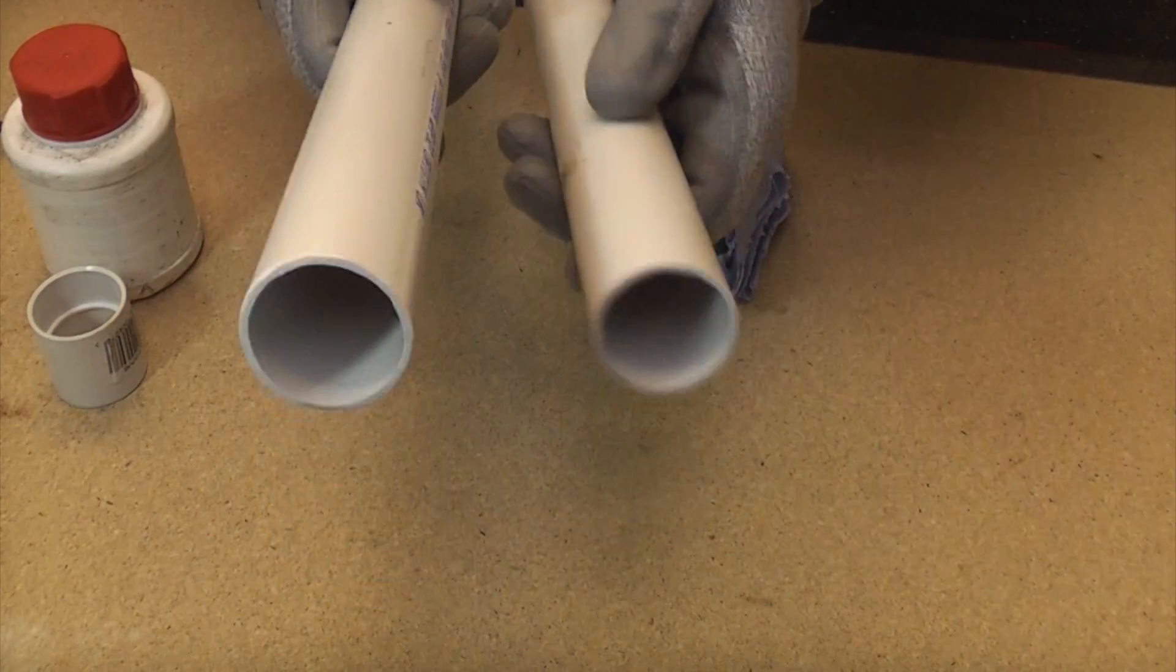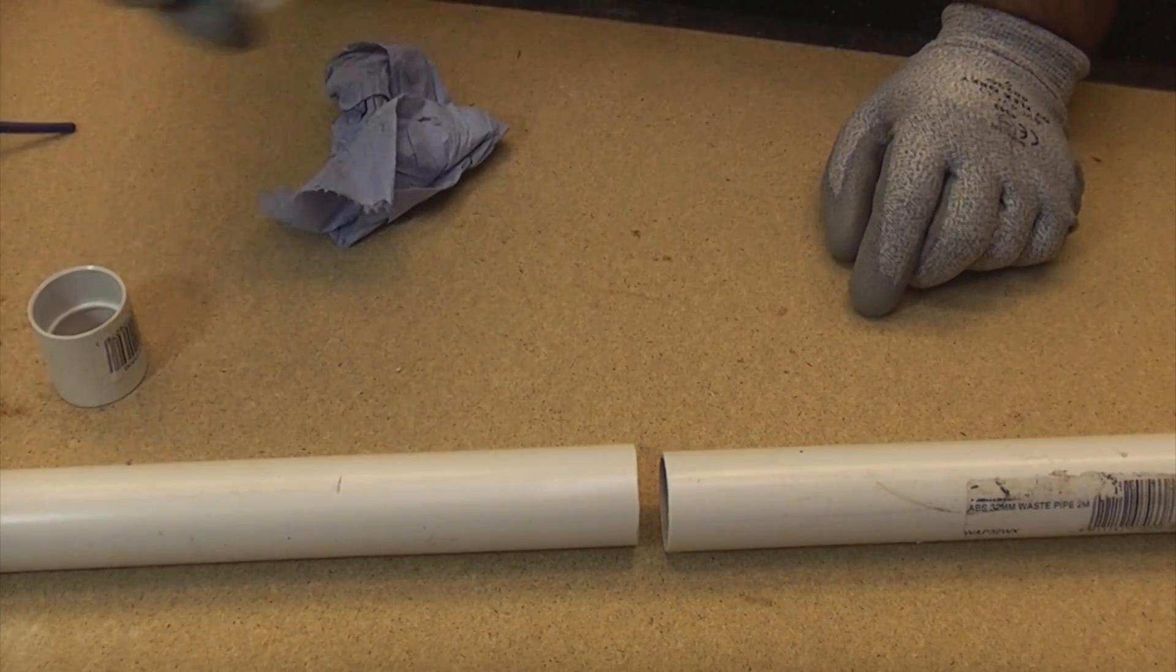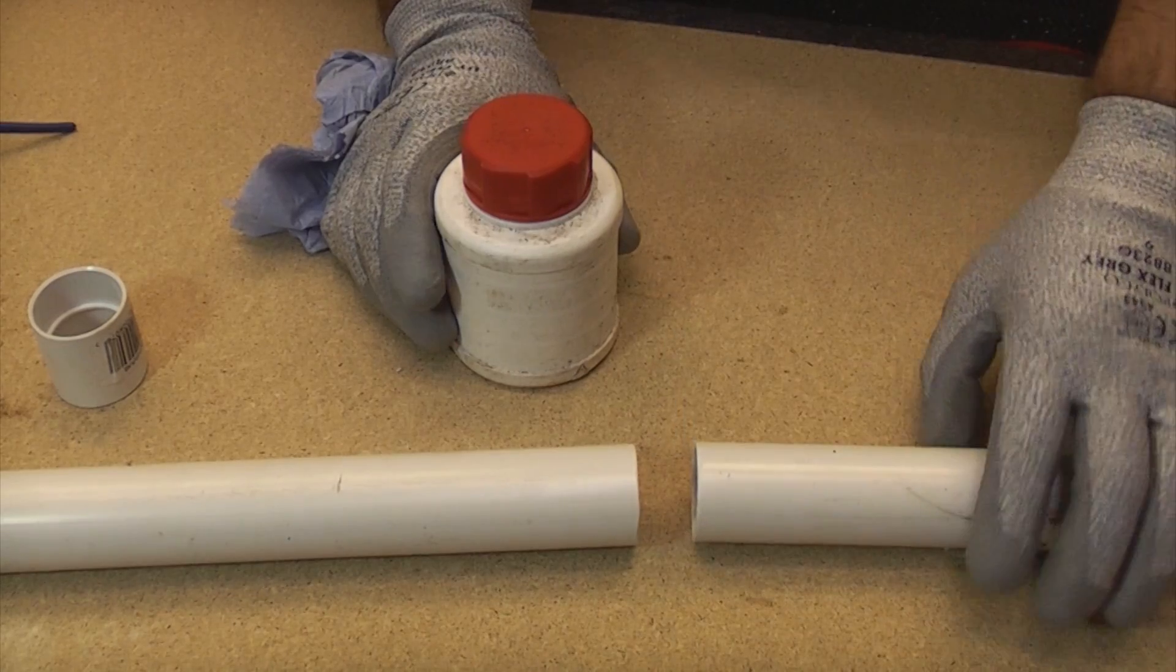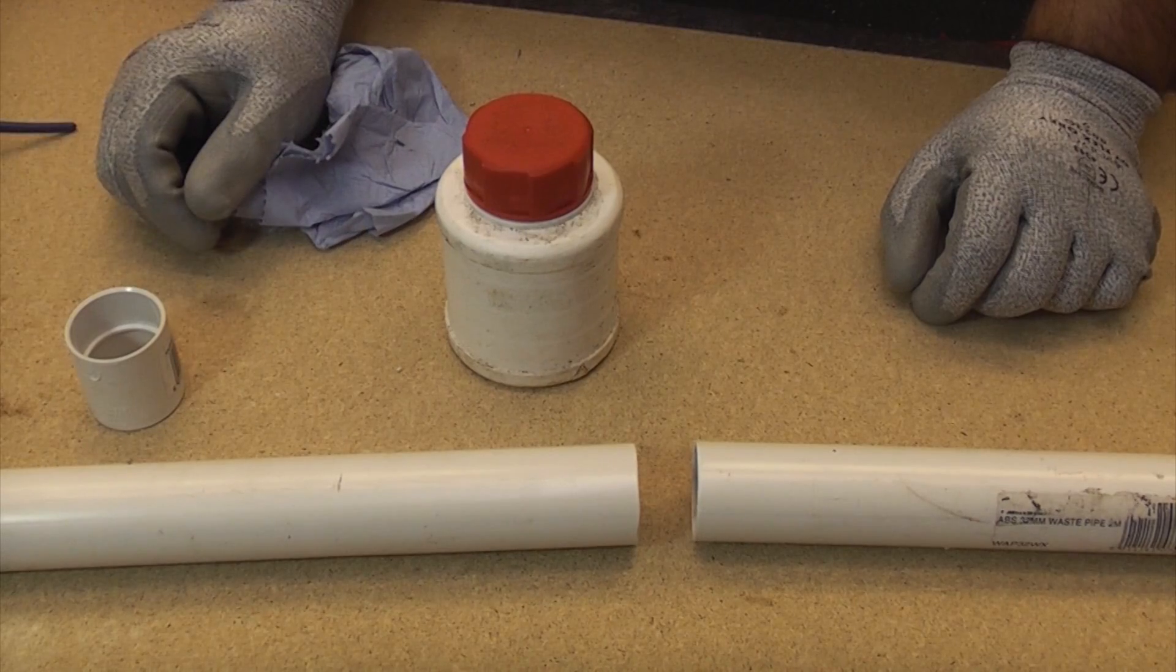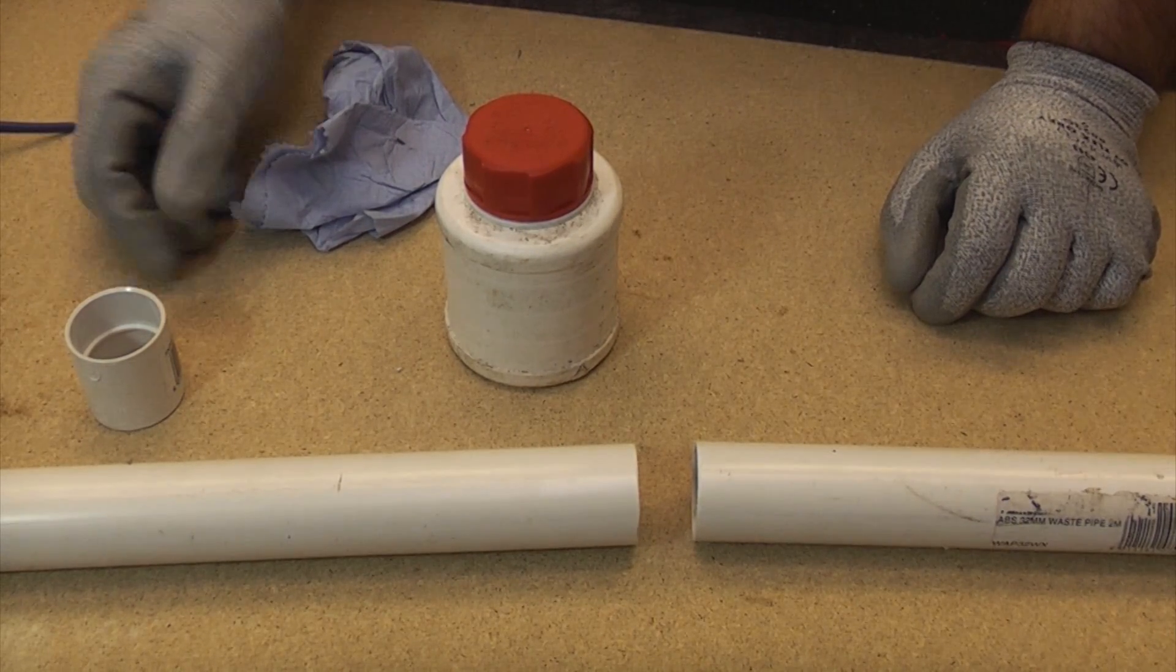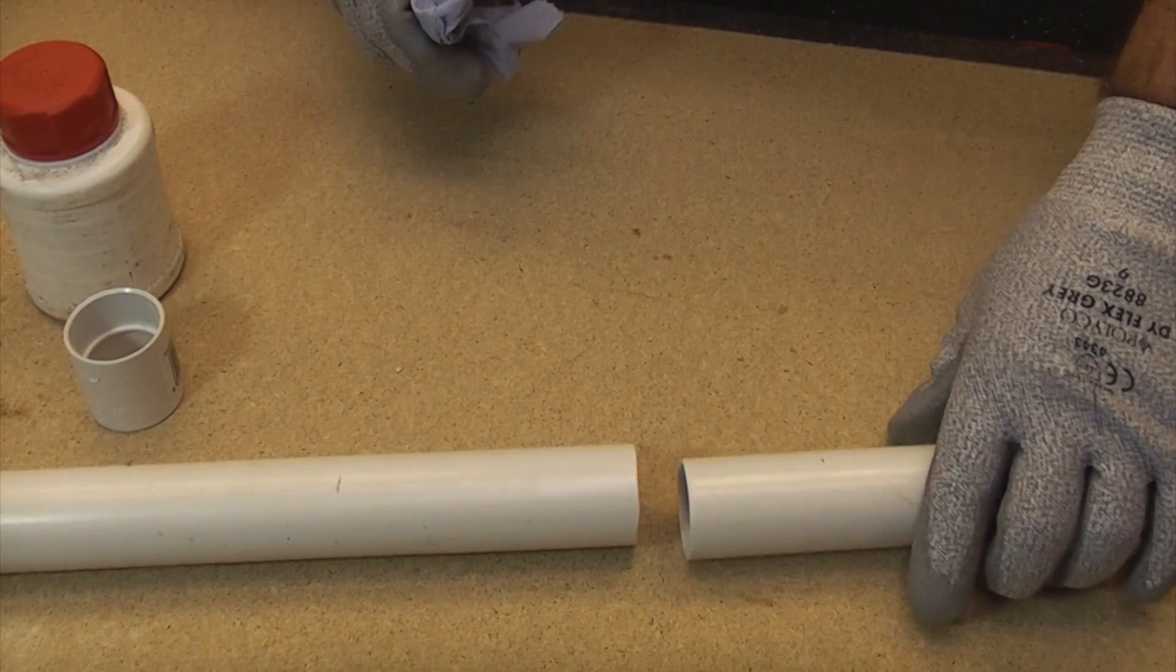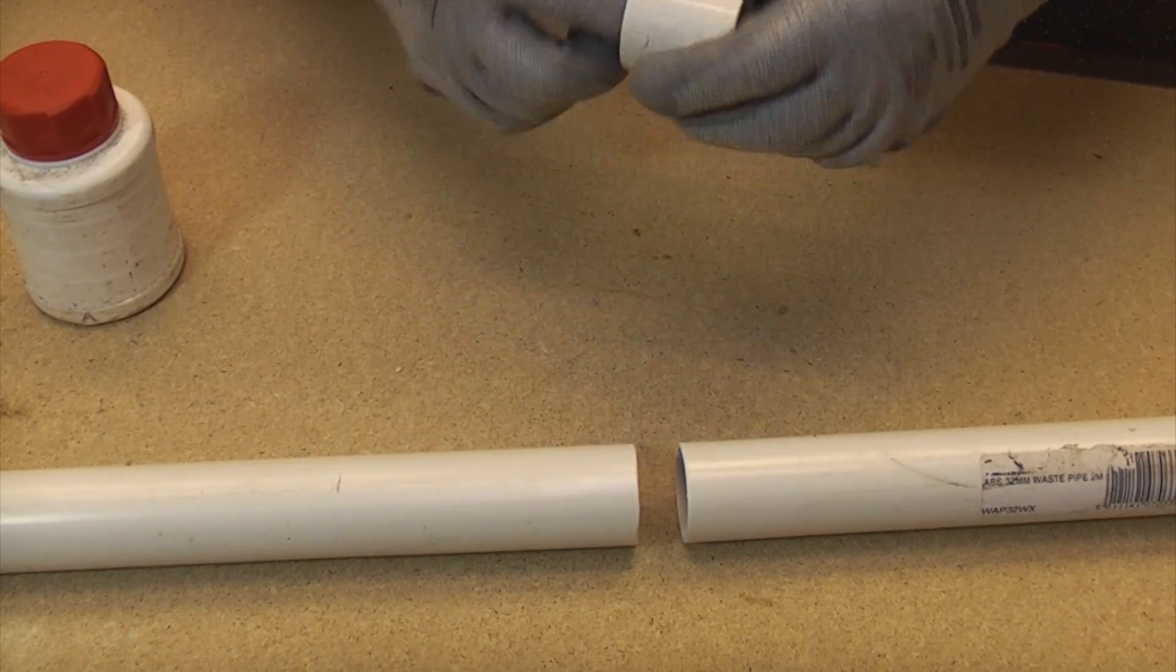We've cut the pipe squarely, deburred it, and given it a wipe. But you need to check the instructions that came with your solvent weld glue, because some pipe and fittings do need cleaning with a solvent before you use them. If you don't clean them with the solvent, there's a good chance the joint will fail over time, so it's vitally important that you read your instructions. We're just going to give the fitting a wipe as well to remove any debris.